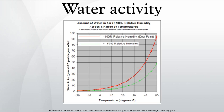Higher aw substances tend to support more microorganisms. Bacteria usually require at least 0.91, and fungi at least 0.7. Water migrates from areas of high aw to areas of low aw. For example, if honey is exposed to humid air, the honey absorbs water from the air. If salami is exposed to dry air, the salami dries out, which could preserve it or spoil it.